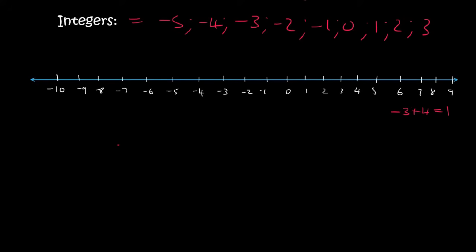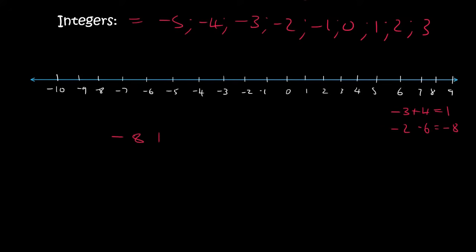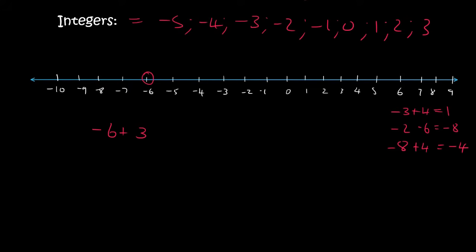Next, minus 2 minus 6. So if we start at minus 2, when you minus, you must go backwards — 1, 2, 3, 4, 5, 6 — so it gives you minus 8. Next, minus 8 plus 4. So you start at minus 8, and when you plus you always go to the right, and that gives you minus 4. Minus 6 plus 3 — so minus 6 is over here, and if you plus 3 you go to the right, and you end up at minus 3.